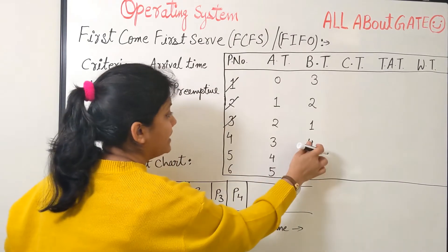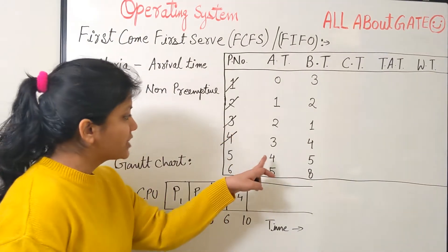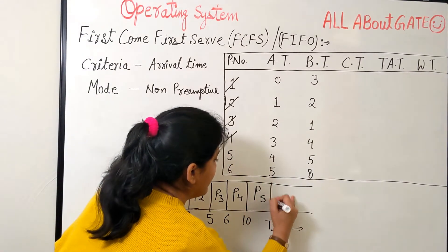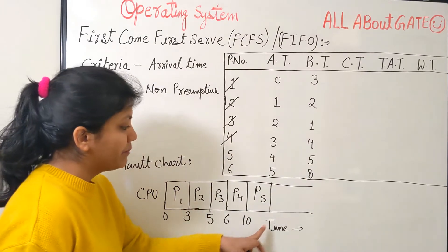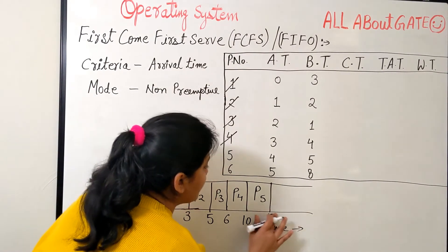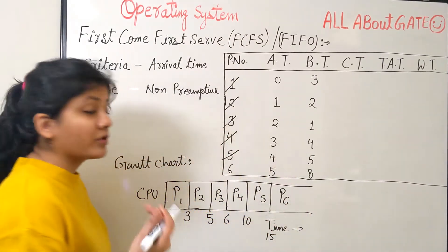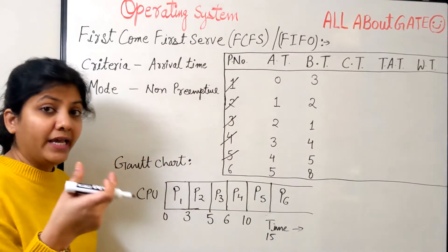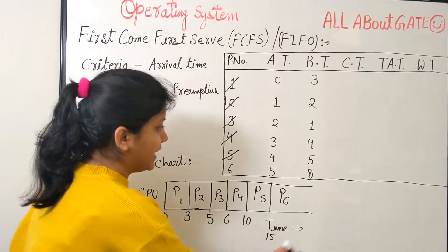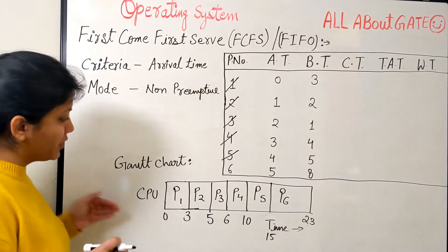P4 arrives at time 3 and is given 4 bursts. 6 plus 4 gives us 10, so P4 runs from 6 to 10. P5 arrives at time 4 and needs 5 bursts — 10 plus 5 is 15, so P5 runs from 10 to 15. Finally, P6 arrives last and needs 8 bursts — 15 plus 8 is 23, so P6 runs from 15 to 23.